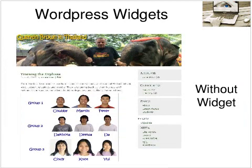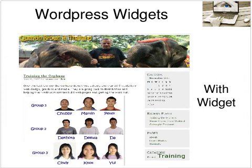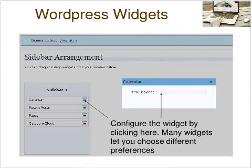Here's my page without widgets, with a standard sidebar. And now I've added the widgets here. You can see I've got calendar, recent posts, pages, and a category cloud. On this page, I've put them in that box which was the default sidebar.